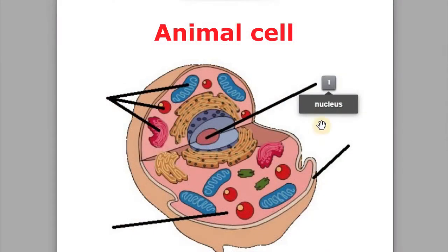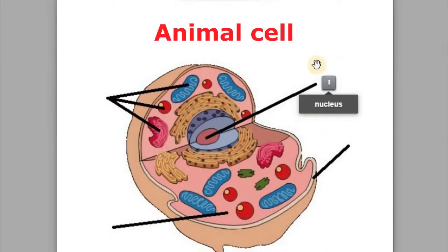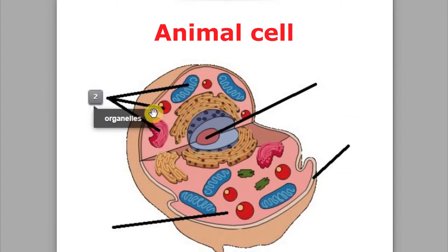First of all, let's analyze an animal cell. Here in the center we have the nucleus, which is like the brain of the cell — it controls all the cell's activities. There are many different components which carry out different functions, which are the organelles.